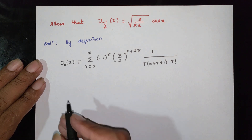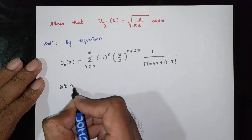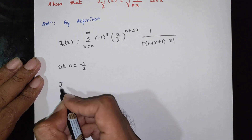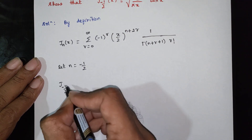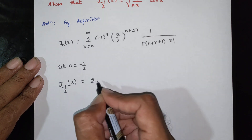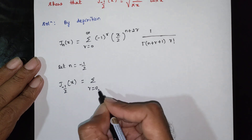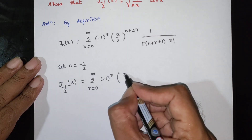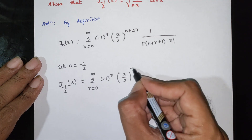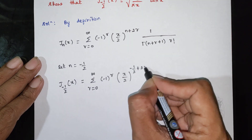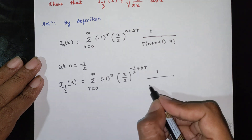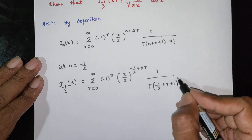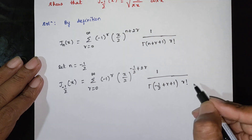Let n = −1/2. Then J₋₁/₂(x) is equal to summation from r=0 to infinity of (−1)^r · (x/2)^(−1/2+2r) · [1 / (Γ(−1/2 + r + 1) · r!)].